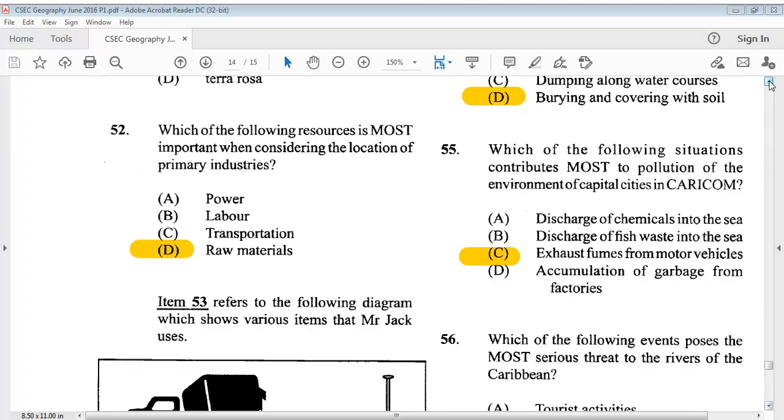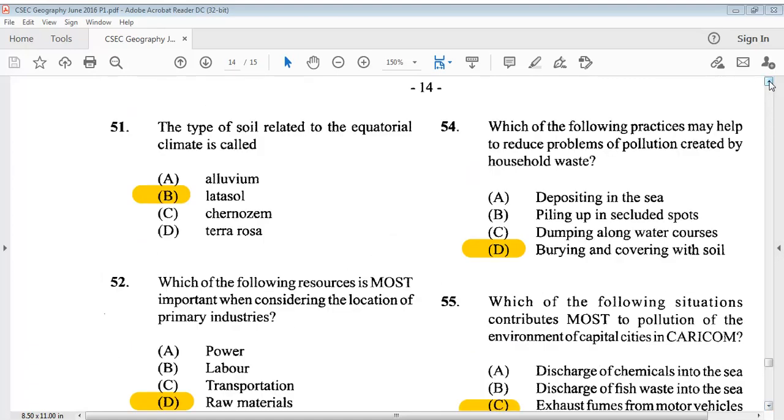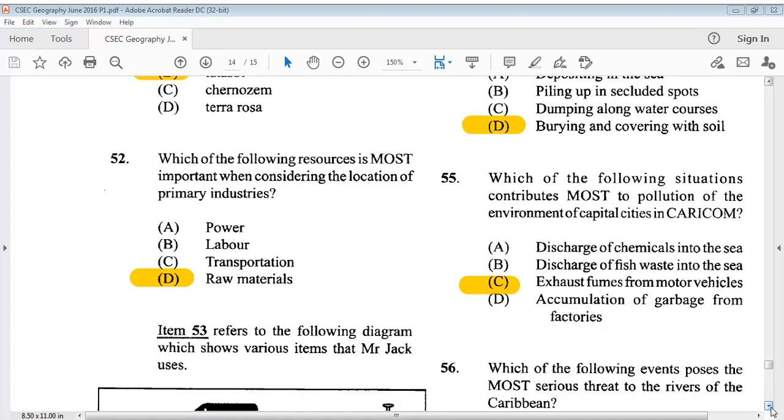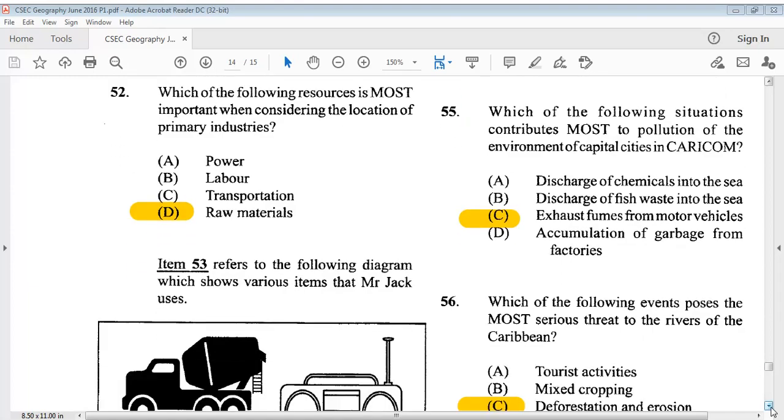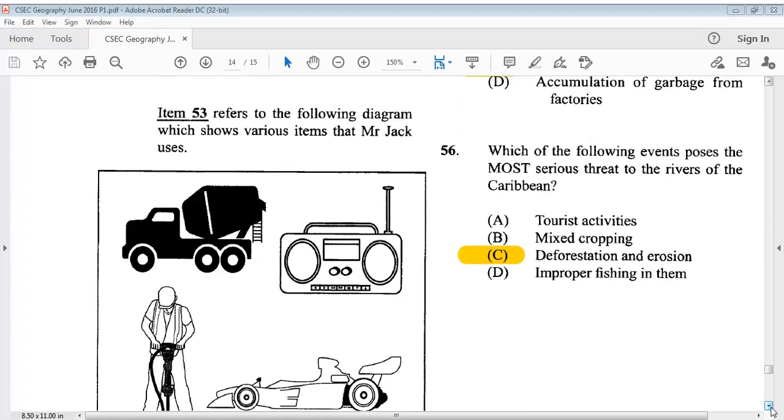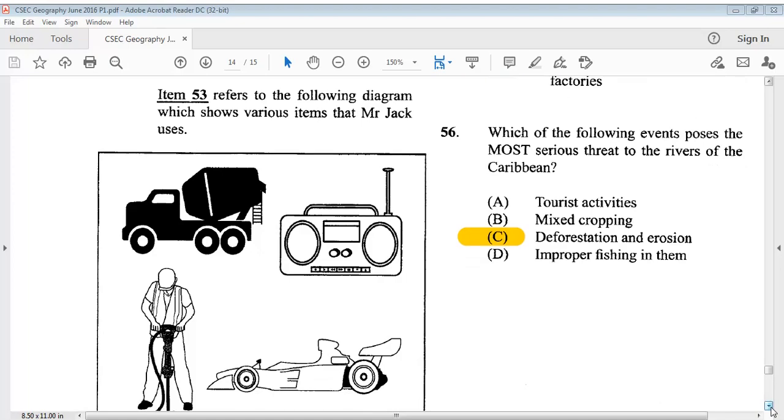Question 54 says, which of the following practices may help to reduce problems of pollution created by household waste? The answer is D, burying and covering with soil. Question 55: Which of the following situations contributes most to pollution of the environment of capital cities in CARICOM? The answer is C, exhaust fumes from motor vehicles. Question 56: Which of the following events poses the most serious threat to the rivers of the Caribbean? The answer is C, deforestation and erosion.